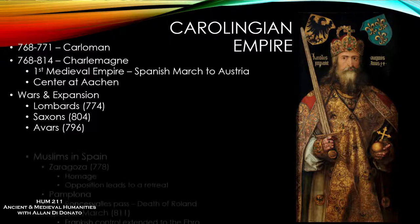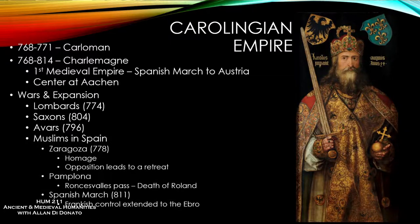Like his grandfather Charles Martel, Charlemagne dealt with the Muslims in Spain. But the situation was different — where Islamic armies had been moving into Frankish territory during Martel's time, now Charlemagne moved into Muslim Spain in an attempt to take territory. He wasn't very successful. Several cities in the north — Zaragoza, Gerona, Barcelona, Huesca — were under attack by the Emir of Córdoba, Abd al-Rahman I, and the Muslim leaders of those cities offered to submit to Charles in exchange for aid.